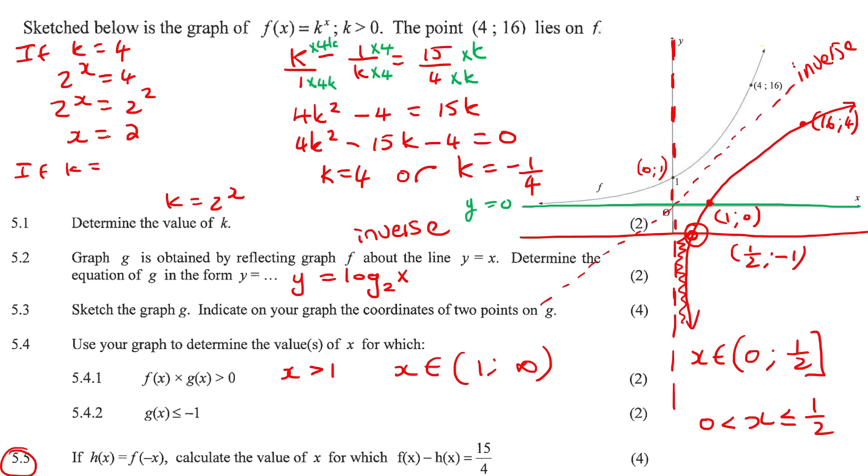Now if k is minus a quarter, which is this one now, then we say 2 to the x is equal to minus a quarter. But now this will have no solution. This expression here is an exponential graph, which is this one over here, and we said that thing is always positive. It can't be a negative. There is no value for x that you could plug in here. Even if you tried to use logs here, you're going to get an error. So this is just going to be no solution. So then the only answer would be x is 2.